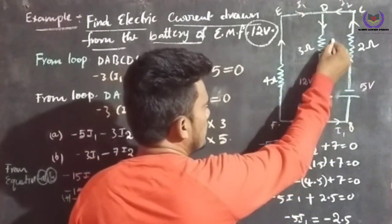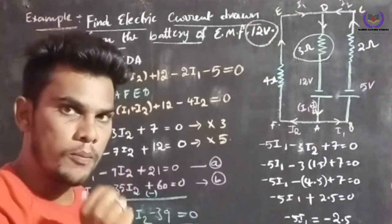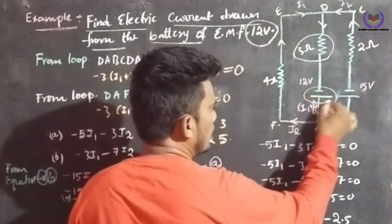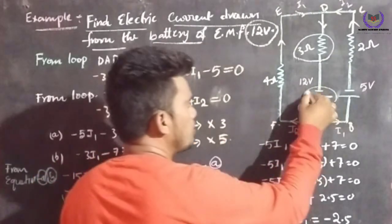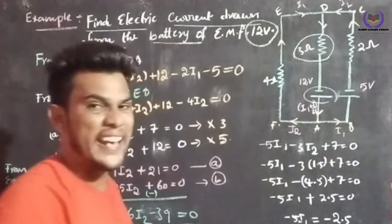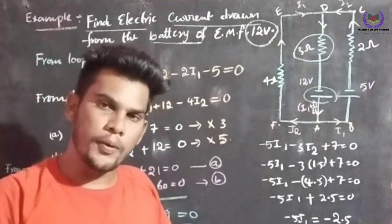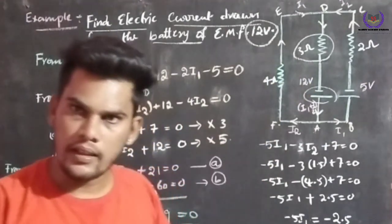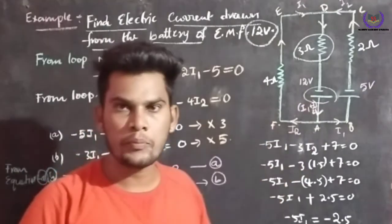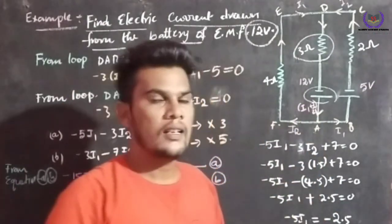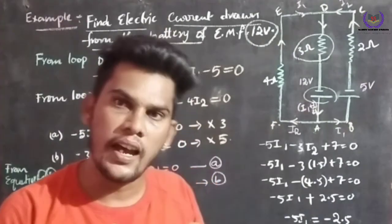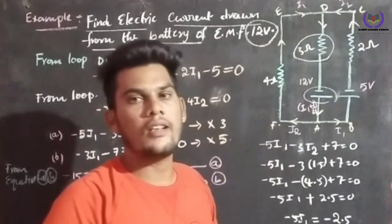When I start from point D to A, there are several electric components. One component is a resistor with three ohms, and there is also a battery of 12 volts. The current flowing through this line is I1 plus I2. So there are two components: a 3-ohm resistor and a 12-volt battery, with current I1 plus I2 flowing through this loop.